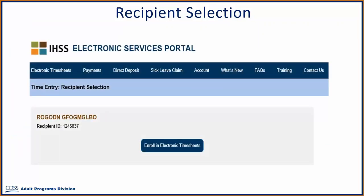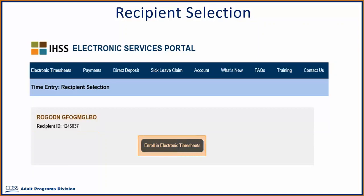You will be taken to the Time Entry Recipient Selection screen, where you will see a list of all recipients that you work for. In this example, we will have one recipient. To begin the process of inviting your recipients to enroll in Electronic Timesheets, you will select the Enroll in the Electronic Timesheet button.